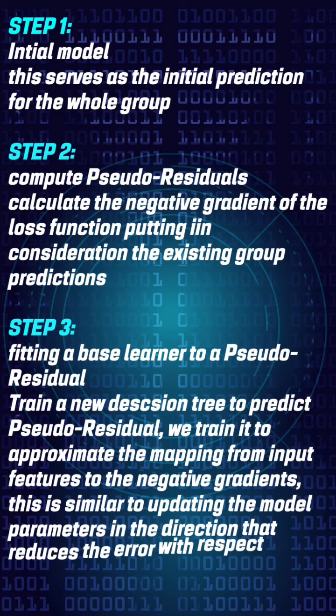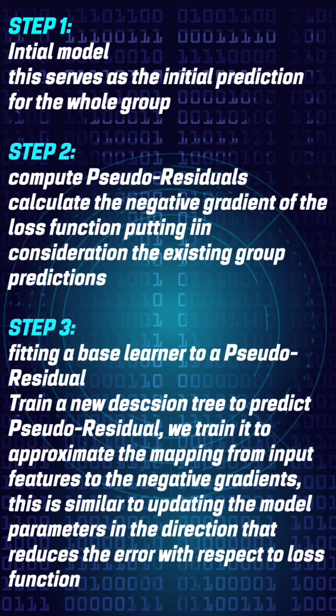Step 2: Compute pseudo-residuals. Calculate the negative gradient of the loss function, putting in consideration the existing group prediction.